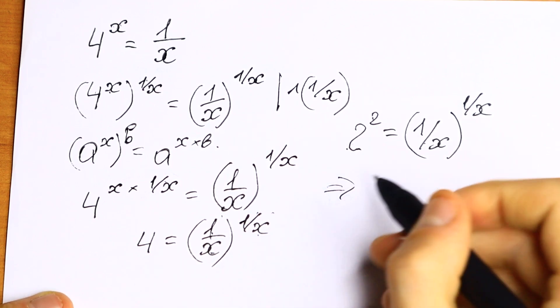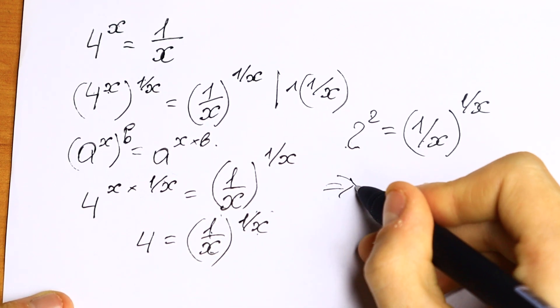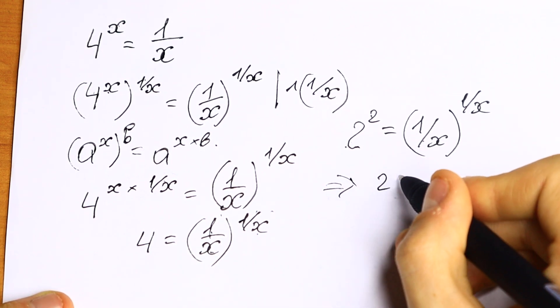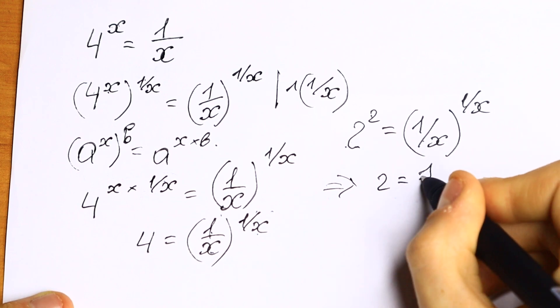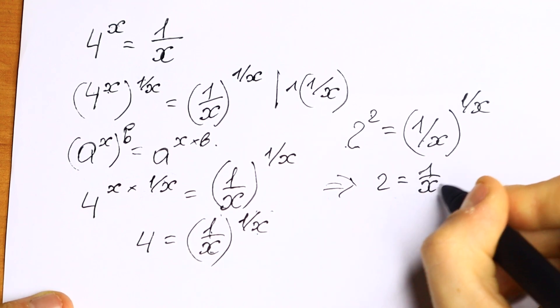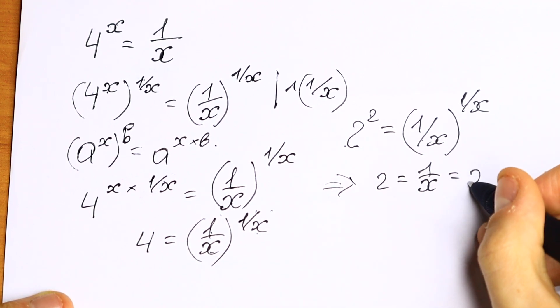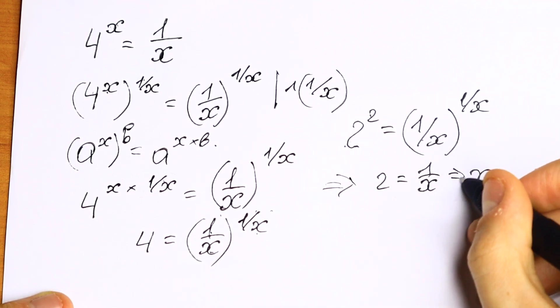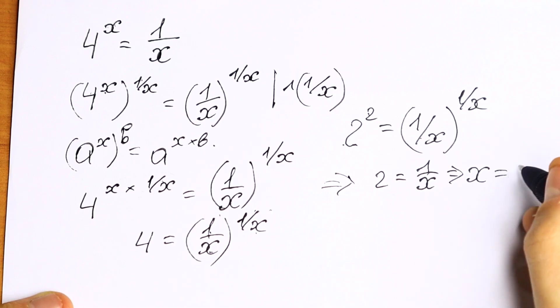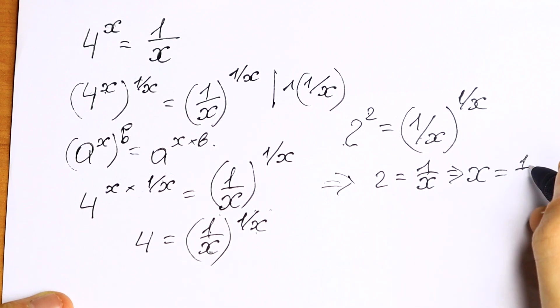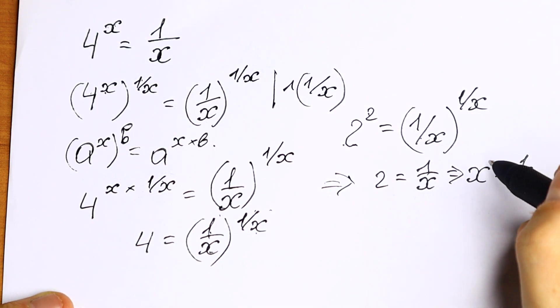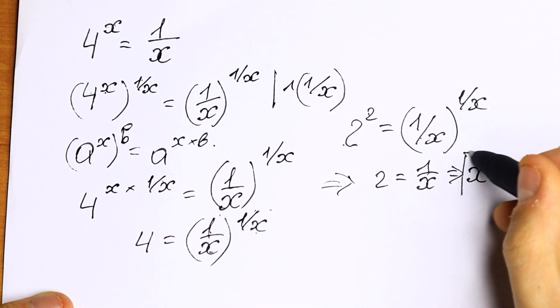The only way this equation works is when 2 equals 1 over x and the exponent also equals 1 over x — and moreover, these are the same. So we need only one equation: 2 equals 1 over x, and from here x equals 1 over 2, or one half.